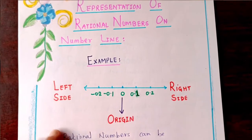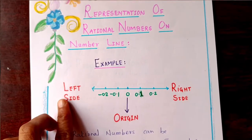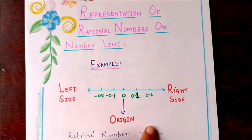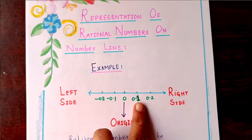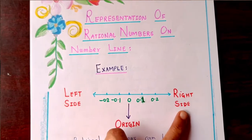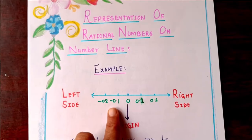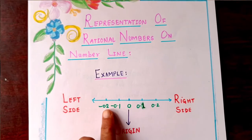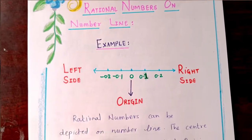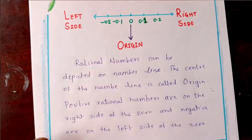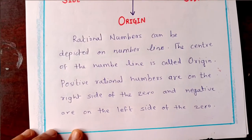Here is an example showing the left side of the origin and the right side of the origin. On the right side there are positive numbers, and on the left side of the origin are negative numbers. Here is the description.